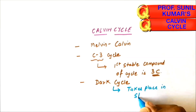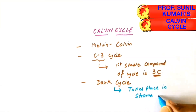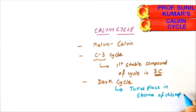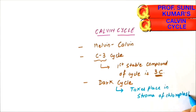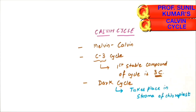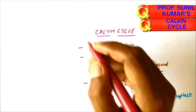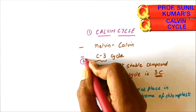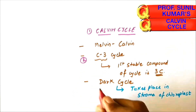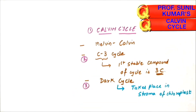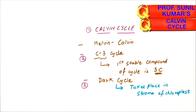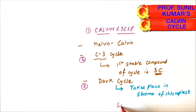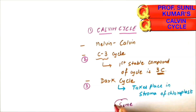The Calvin Cycle is called the dark cycle because it takes place in the stroma of the chloroplast. In your exam, you may get a question to explain the Calvin cycle, the C3 cycle, or the dark cycle with a neat and labeled diagram — the answer remains the same.